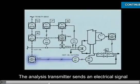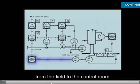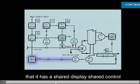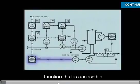The analysis transmitter sends an electrical signal from the field to the control room. You know this because the symbol for the analysis controller indicates that it has a shared display, shared control function that is accessible.